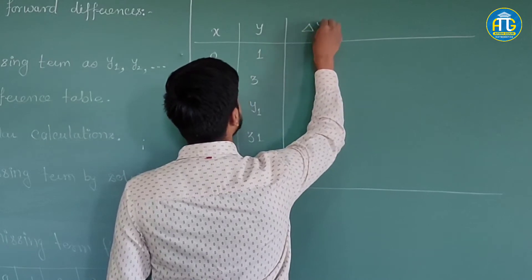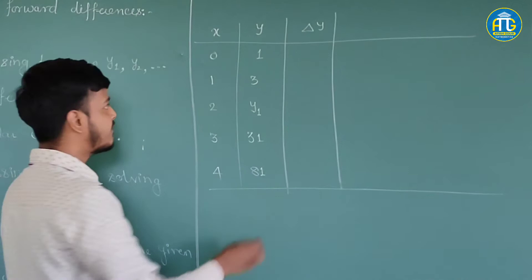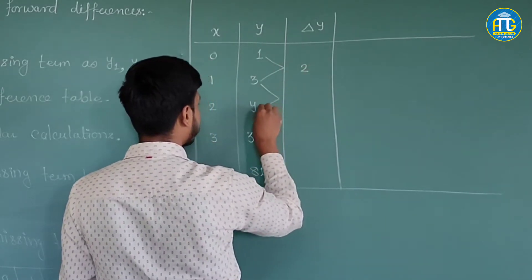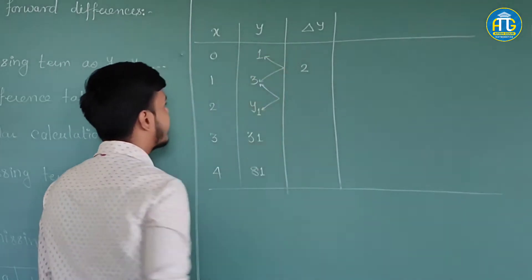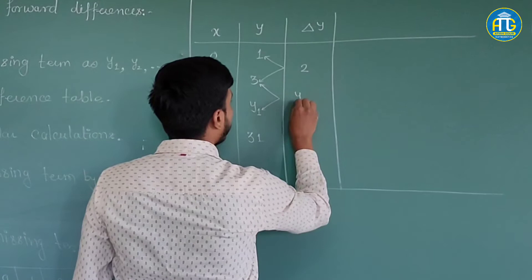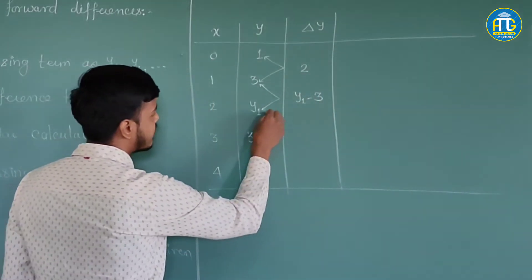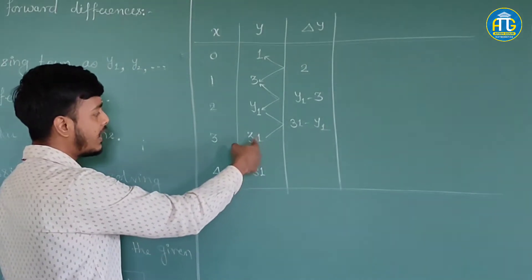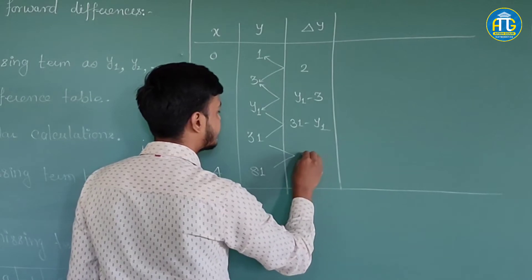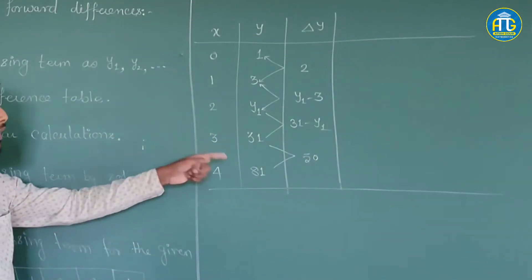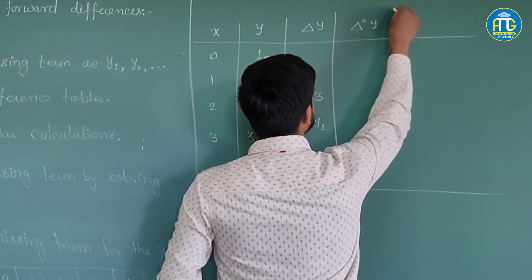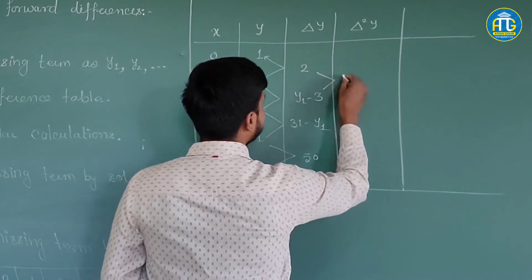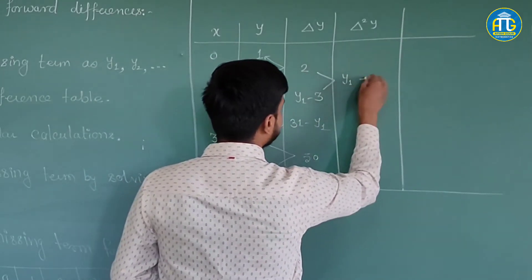Now let us find out the differences. For Δy: the difference of 1 and 3 is 2 — always take the positive difference. The difference of y1 and 3 is y1 minus 3. The difference of 31 and y1 is 31 minus y1. The difference of 81 and 31 is 50. Now for Δ²y: the difference of (y1−3) and 2 is y1 minus 3 minus 2, that is y1 minus 5.